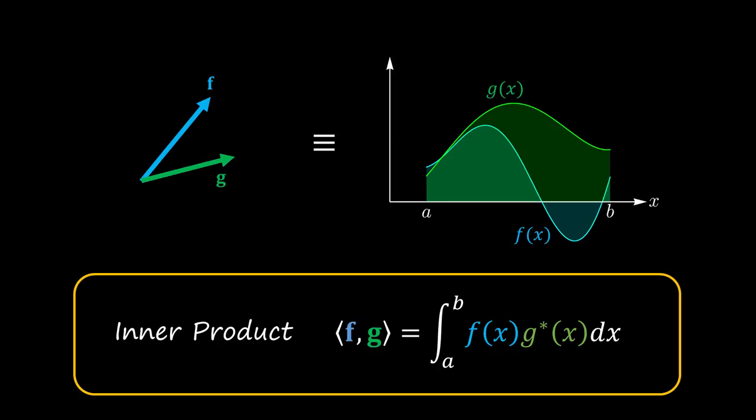We define the Hermitian inner product for the space of functions in the interval [a,b] as the integral from a to b of function f multiplied by the complex conjugate of function g.